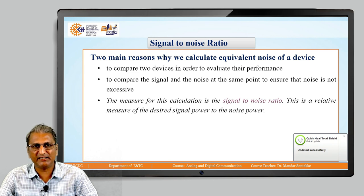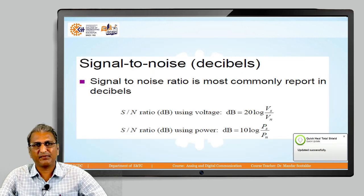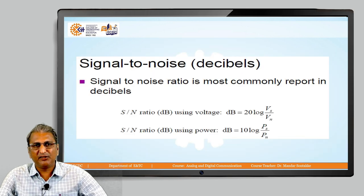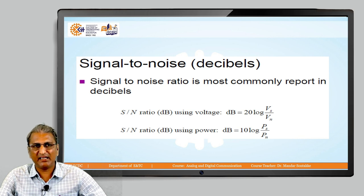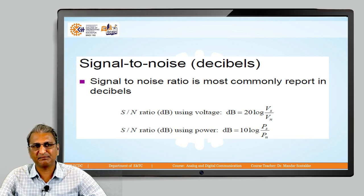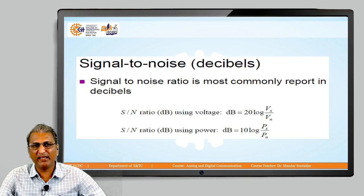This is the relative measure of the desired signal power to the noise power. So signal-to-noise ratio can be measured in decibels also. SNR in dB is given by the formula 20 log Vs upon Vn. Same SNR ratio in dB in terms of power is given by 10 log Ps upon Pn. So the signal can be calculated in terms of voltage or in dB.